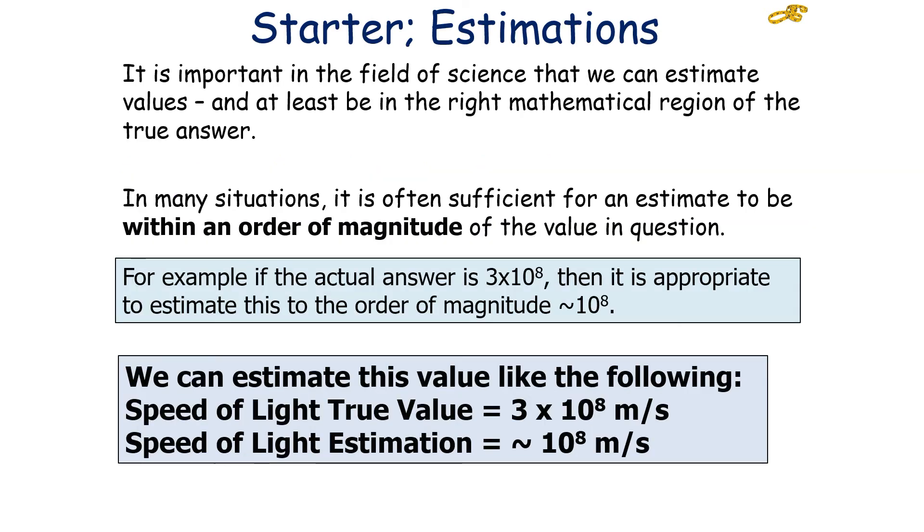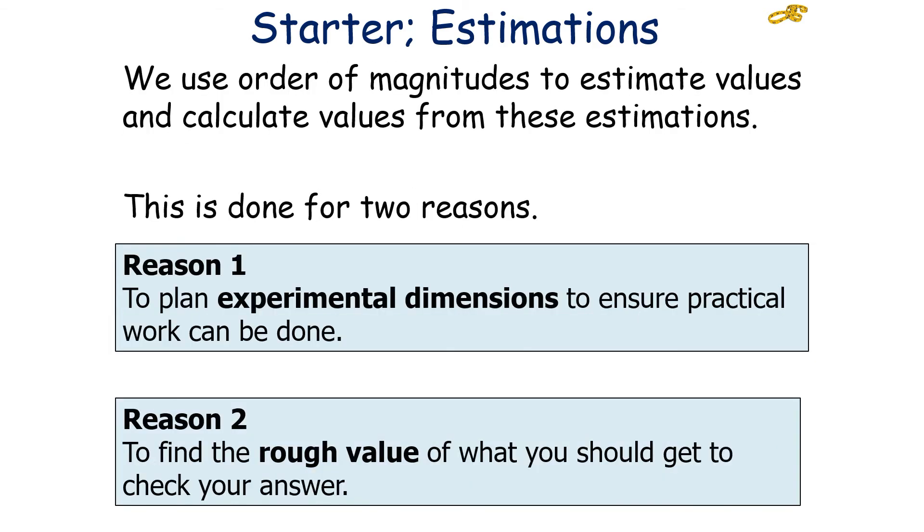It's important in the field of science that we can estimate values and at least be in the right mathematical region of the true answer. In many situations, it's often sufficient for an estimate to be within an order of magnitude of the value in the question. For example, if the actual answer was 3 times 10 to the 8, for example, the speed of light is 3 times 10 to the 8 meters per second, then it's appropriate to estimate this to the order of magnitude of approximately 10 to the 8. So our speed of light estimation is approximately 10 to the 8 meters per second.